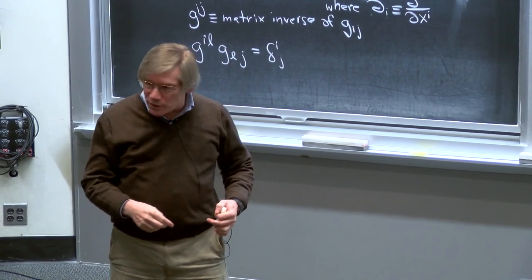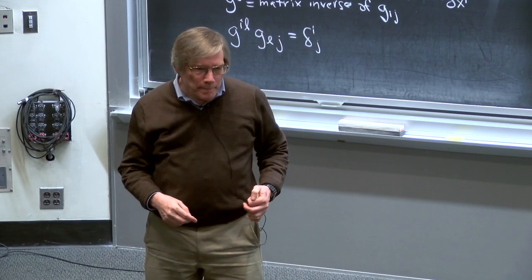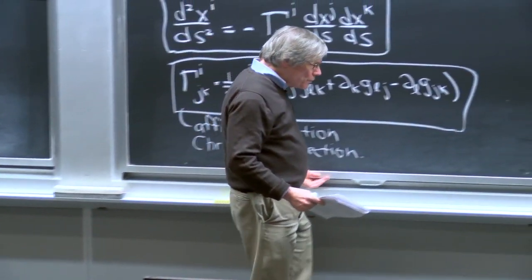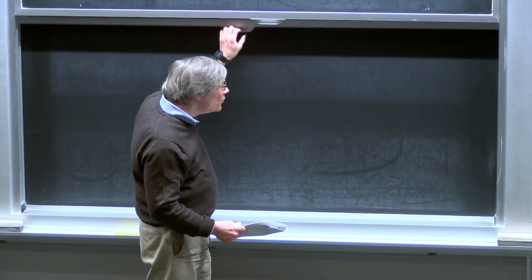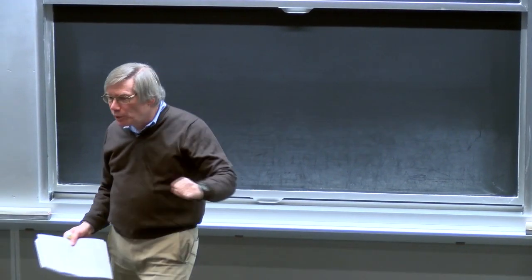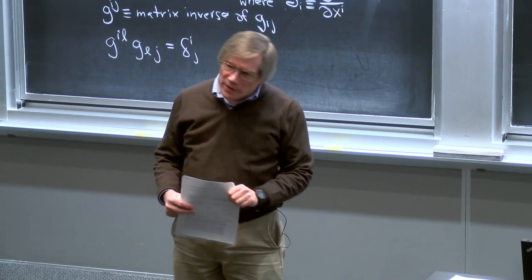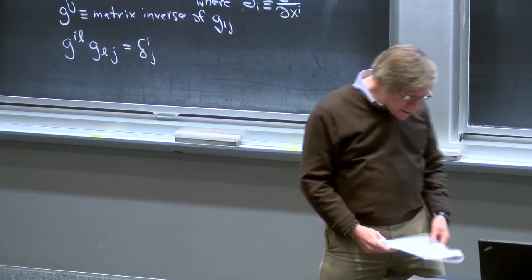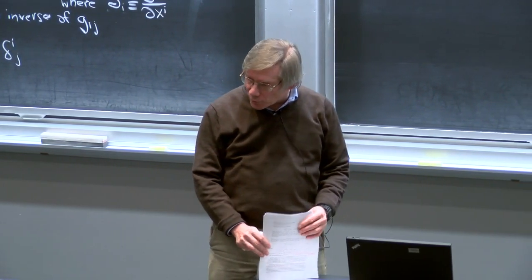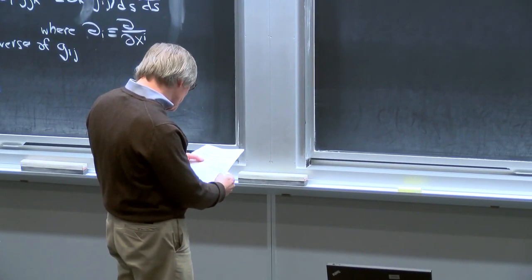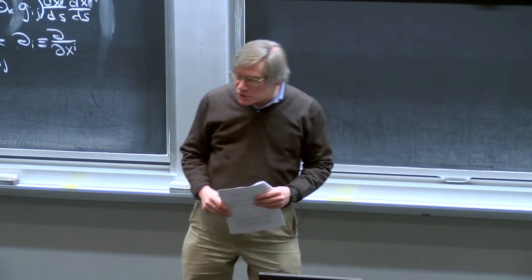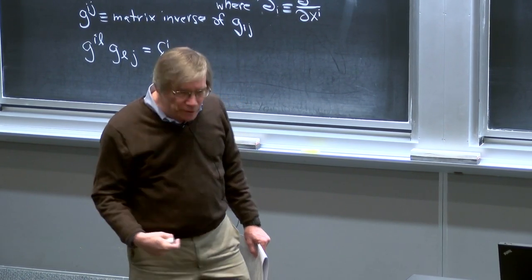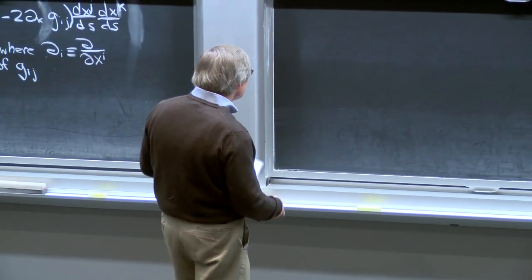That finishes the derivation of the geodesic equation. On the homework, you will apply this formalism to the Robertson-Walker metric and learn how moving particles slow down as they travel through an expanding universe — completely analogous to how photons lose energy. For an example, we'll look at the Schwarzschild metric, which describes black holes and anything spherically symmetric with a gravitational field. Black holes are the most interesting example because that's where the most surprises lie.